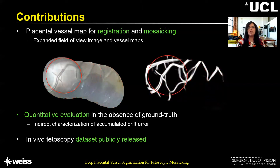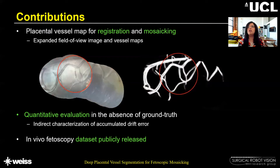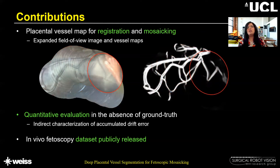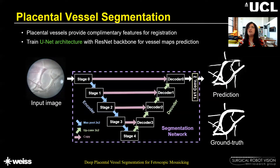We made the following contributions in this work. We use vessel segmentation maps for registration and mosaicing, which gave expanded field of view images both from the RGB image and from the vessel maps. We note that many of the visibility challenges in lighting conditions and the presence of moving occlusions are filtered out, and the vessels are found to have unique recognizable shapes. Since ground truth is not available in the in vivo setting, we proposed a quantitative evaluation metric in the absence of ground truth. Moreover, we contribute the first dataset of six in vivo fetoscopic procedures.